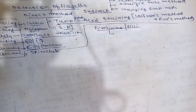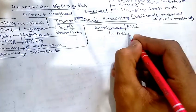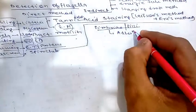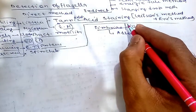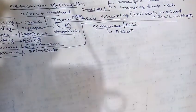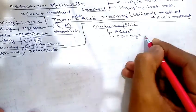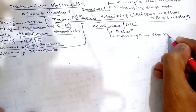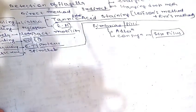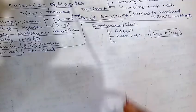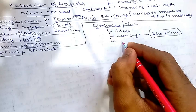The next topic is fimbriae or pili. Pili are short, fine, hair-like appendages that help in bacterial adhesion — they are known as the organ of adhesion, whereas flagella were the organ of locomotion. A special type of pili that helps in conjugation is known as sex pili.